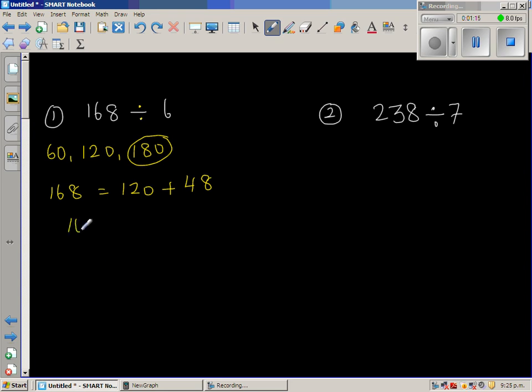So 168 divided by 6, I can do like this. First I'll divide 120 by 6. I know 12 divided by 6 is 2, so 120 divided by 6 would be 20. And I've got now 48 to divide by 6. So 6 goes in 48 how many times? 6 times 8 is 48.